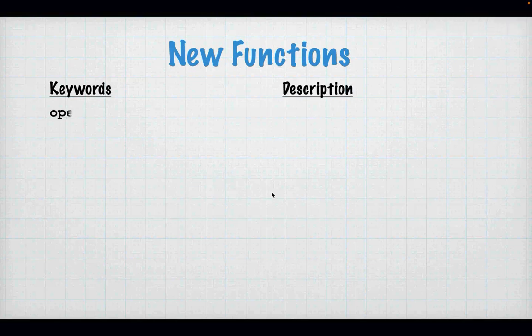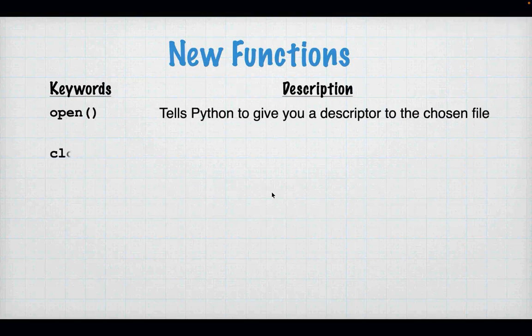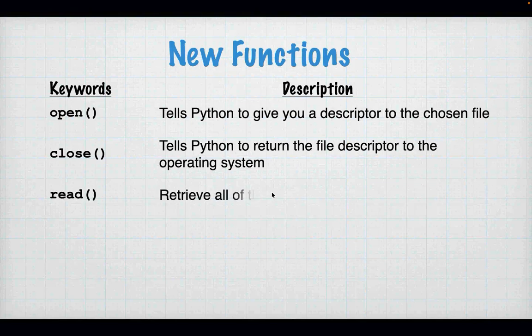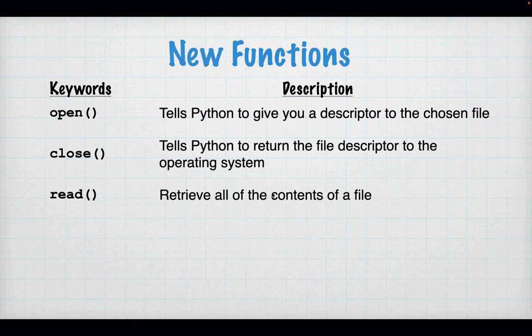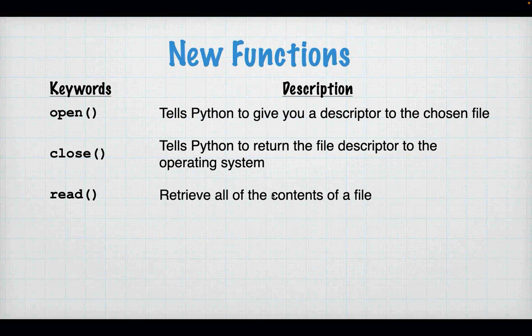So here are the new things we need to know about functions. We're relying on built-in functions that Python gives us: open, close, and read. Open is how you get at the file — it doesn't actually give you the data in it, but it points to it. Close is removing that pointer to the file. And read is getting you the contents of the file. Now there are bunches of ways to read files. These are the three basics that you will have to understand tonight, and then there are a couple extra.